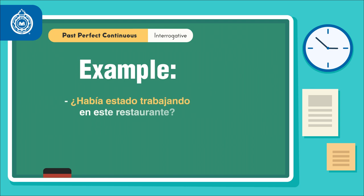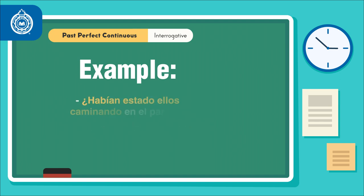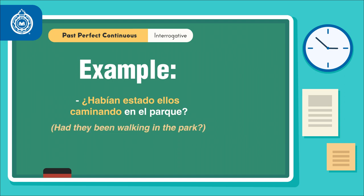¿Había estado trabajando en este restaurante? — Had I been working in this restaurant? ¿Habían estado ellos caminando en el parque? — Had they been walking in the park?